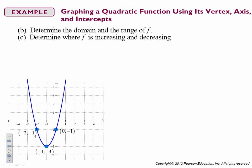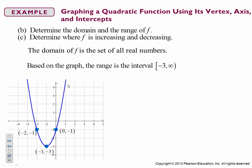Domain and range. Domain is all real numbers. The range is from negative three to infinity. It's decreasing from negative infinity to one. Sorry, negative one. And from negative one to infinity, it's increasing.